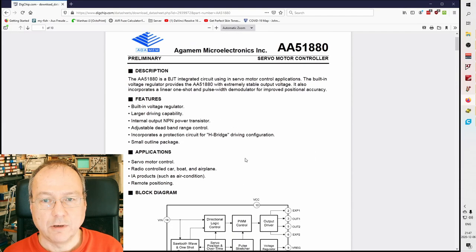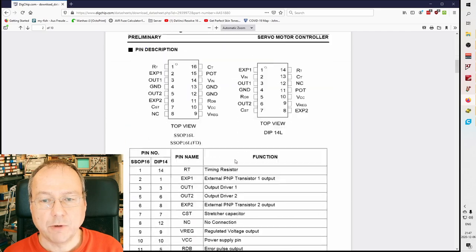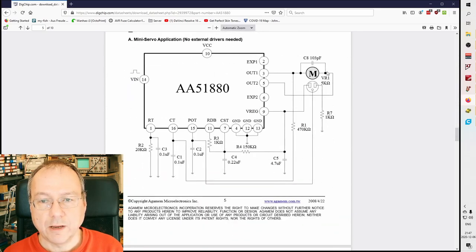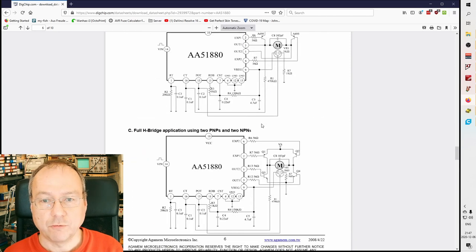It's an H-bridge drive configuration because the motor has to be able to turn both to the left and to the right. This is done by changing the polarity of out one and out two until the position of the potentiometer, which is coupled to the motor, corresponds to the input signal which we are sending from the microcontroller. Thus we get the position control.